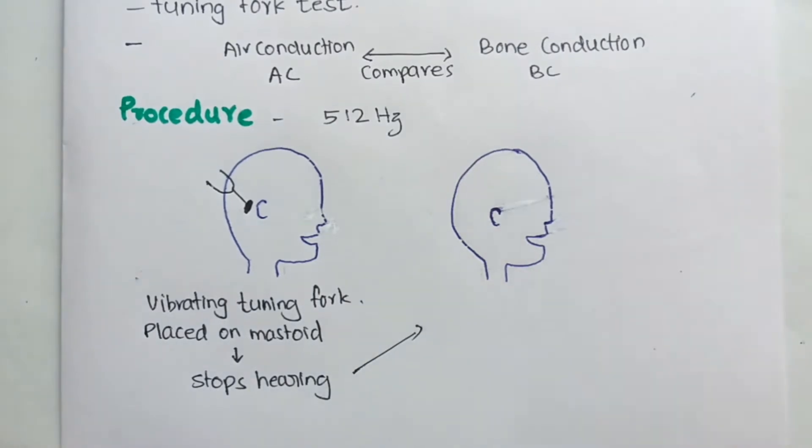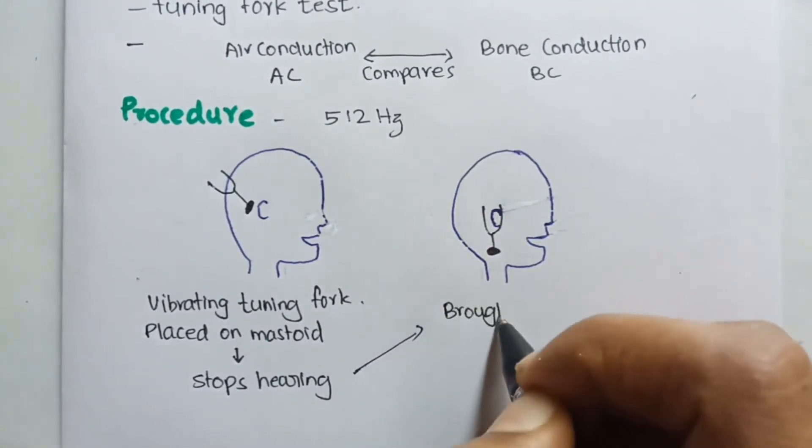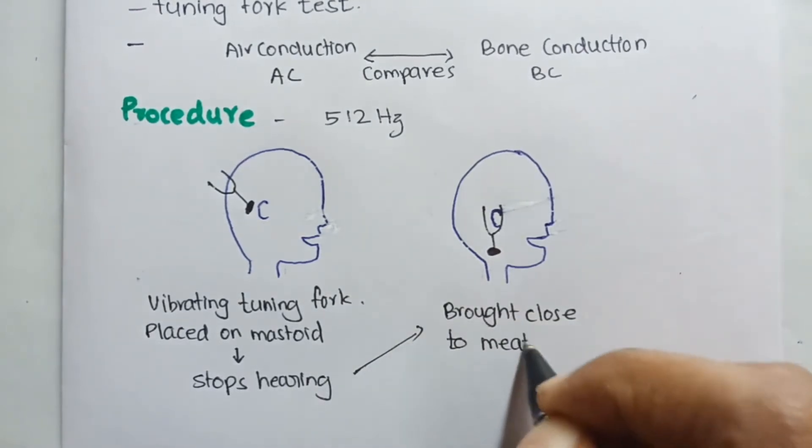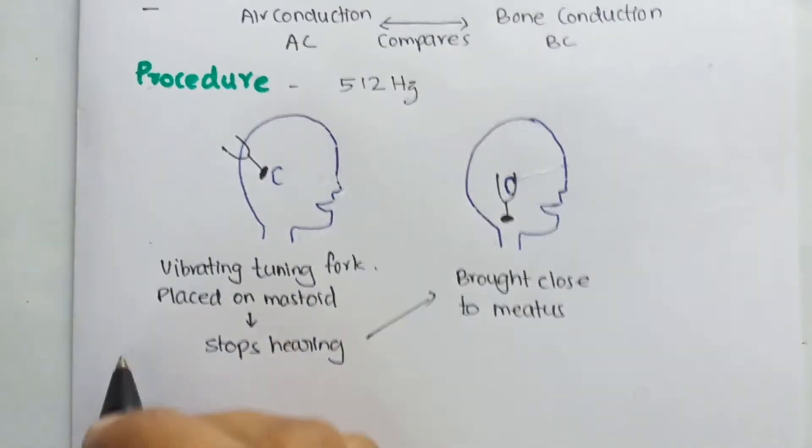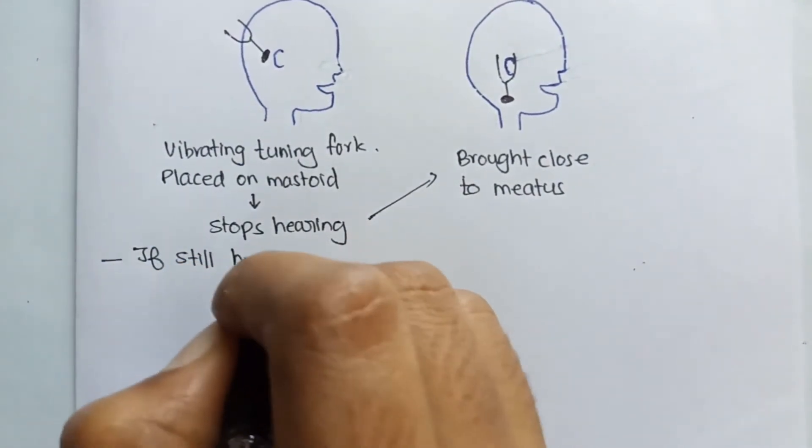When the sound stops, the tuning fork is placed before the external auditory meatus. And if the sound is still heard, what does that mean?